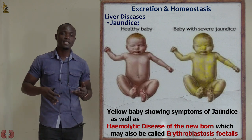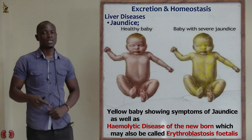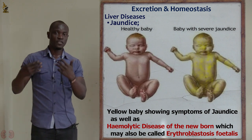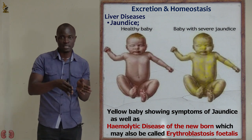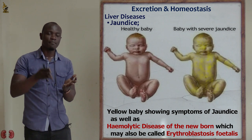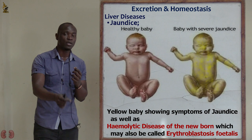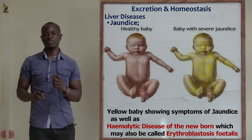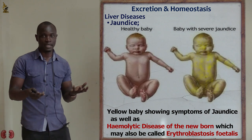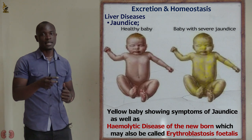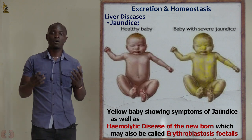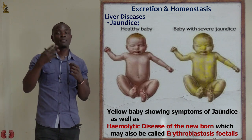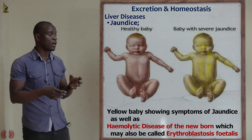Hemolytic disease of the newborn mainly occurs through mass destruction of red blood cells in the fetus. When red blood cells are broken down, they release hemoglobin — consisting of heme and globulin. Normally this process takes place inside the liver, but in hemolytic disease of the newborn, red blood cells are broken down outside the liver, causing excess proteins to be deposited in the skin and tissues of the fetus.